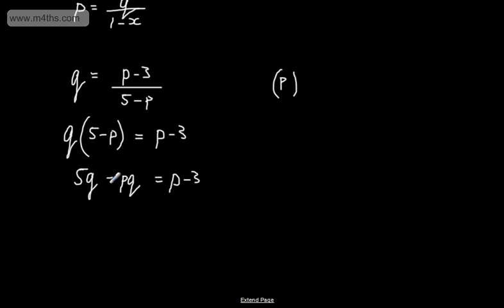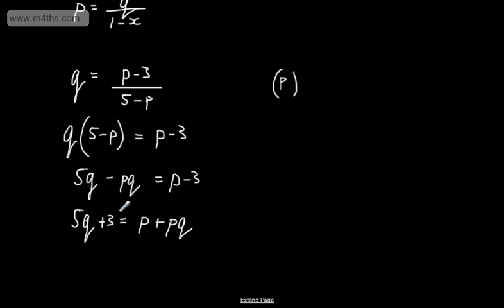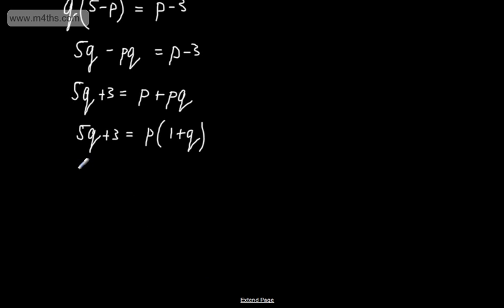At this stage I'm going to add 3 to both sides and add pq to both sides, so that the right-hand side contains all the terms that include p. That gives us 5q + 3 = p + pq. On the right-hand side I've collected all the terms that include p, so factoring p as a common factor we get 5q + 3 = p(1 + q). We simply divide through by the content of the bracket, and we can write that p = (5q + 3) / (1 + q).